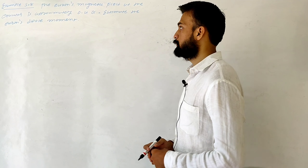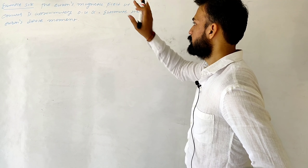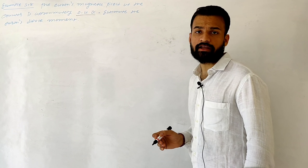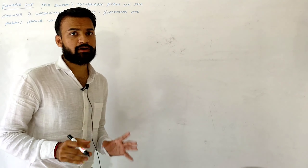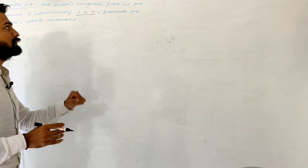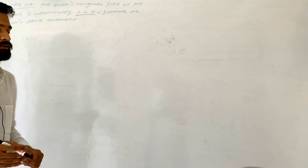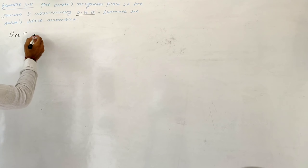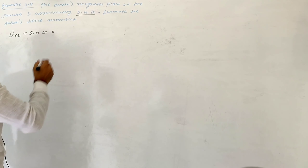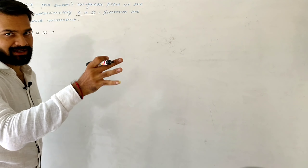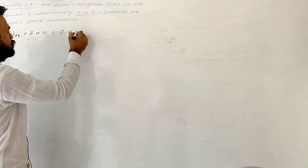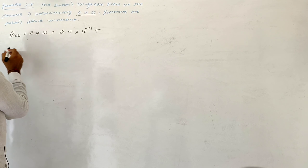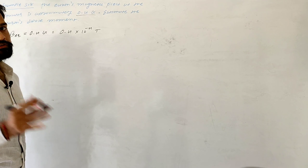Let's see example number 5.8. The Earth's magnetic field at the equator is approximately 0.4 Gauss. Estimate the Earth's dipole moment. So here we have to find the dipole moment of Earth, and the magnetic field at the equator is given as 0.4 Gauss. We know that 1 Gauss is equal to 10 to the minus 4 Tesla, so it is 0.4 into 10 to the minus 4 Tesla.